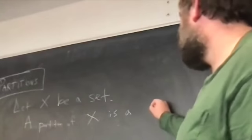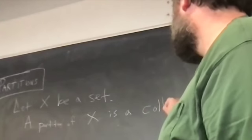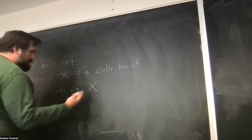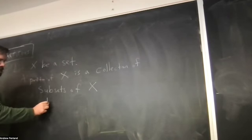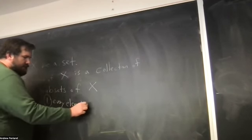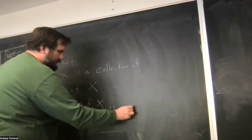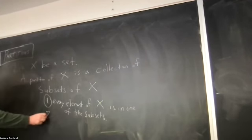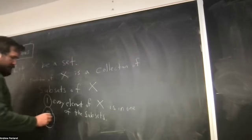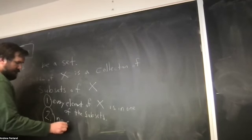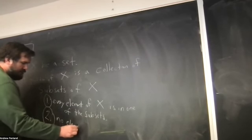Set x via set. A partition of x is a collection of subsets of x subject to two conditions. Every element of x is in one of the subsets. Two, no element of x is in more than one subset.